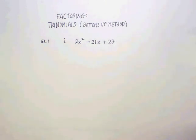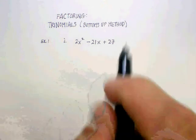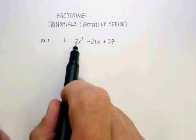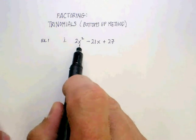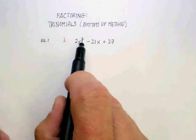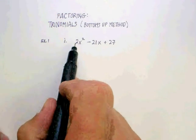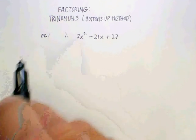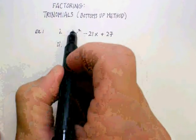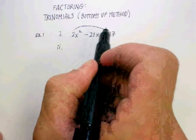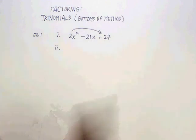The first thing you look for is the coefficient in front of the quadratic term. Remember, the quadratic term is the term that has the square, and notice in this case it's a 2. What you do to factor this is you take the 2 and you multiply it by the constant at the end of the trinomial.